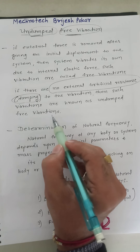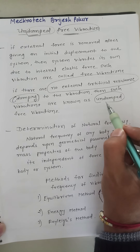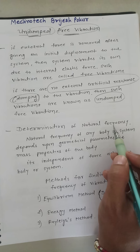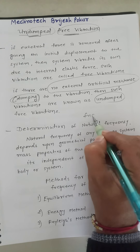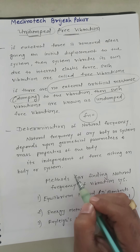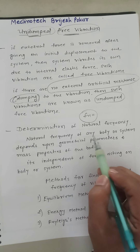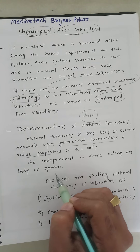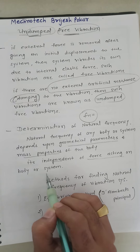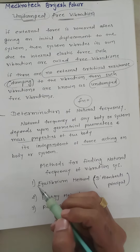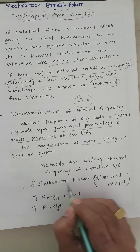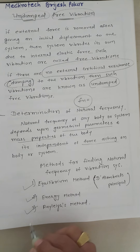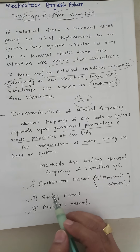Undamped means no artificial resistance. The second topic is determination of natural frequency. We have to find natural frequency fn. The natural frequency of any body or system depends upon the geometrical parameters and mass properties of the body, and it is independent of the force acting on the body. We have three methods to find natural frequency: first, the equilibrium method, also called D'Alembert's principle; second, the energy method; and third, Rayleigh's method.